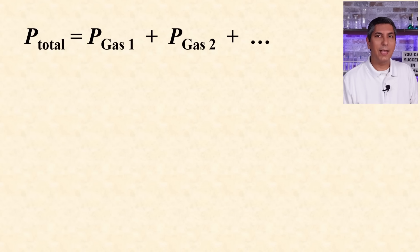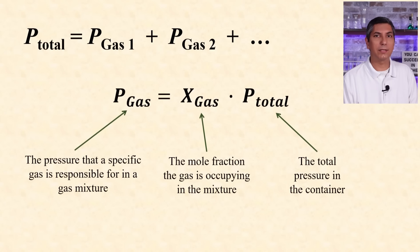When there is a mixture of gases, the partial pressures of the individual gases add up to the total pressure in the container. And to determine the partial pressure of any one gas, just multiply the mole fraction that gas occupies in the container by the total pressure.